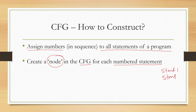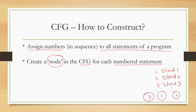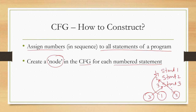To understand what should be considered a node and what should be an edge, we assign numbers in sequence to all the statements of a program. Each statement gets a unique number. Then we create a node in the CFG for each numbered statement — a node is a circle with the corresponding number inscribed inside, representing that statement. So if a program has statement 1, statement 2, statement 3, and so on, we create circles with 1, 2, 3, etc., each representing its corresponding statement.